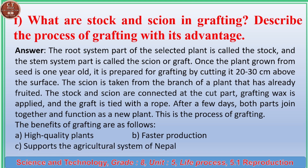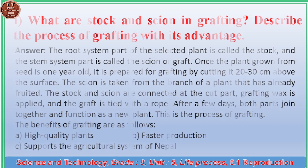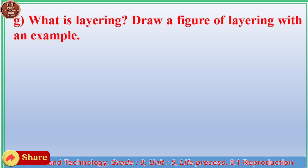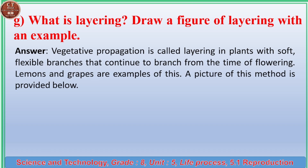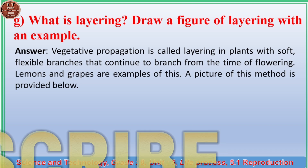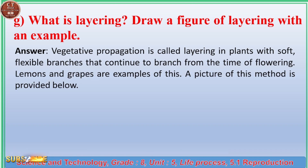Benefits of grafting: (a) high-quality plants, (b) faster production, (c) supports the agricultural system of Nepal. (g) What is layering? Draw a figure of layering with an example. Answer: Vegetative propagation is called layering in plants with soft, flexible branches that continue to branch from the time of flowering. Lemons and grapes are examples of such plants.